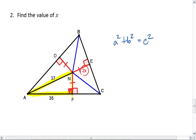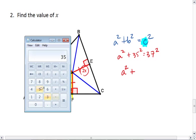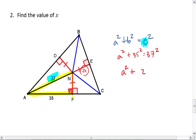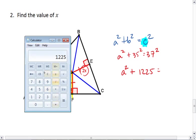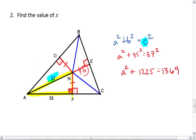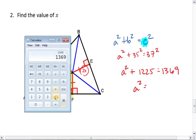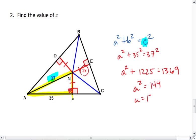And in this case, our hypotenuse is the 37. We have A squared plus 35 squared equals 37 squared. We have A squared plus 1225 equals 1369, so A squared equals 144. A equals 12. This means that 2X equals 12, so X equals 6.